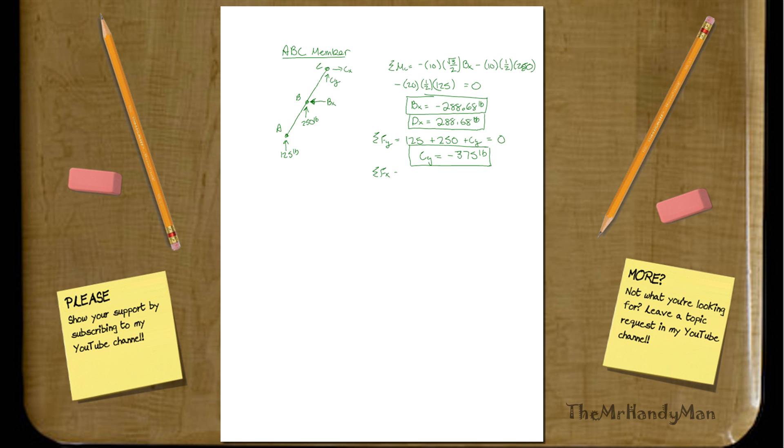If you go to sigma F of X, you're going to find that the only thing that is even putting force is going to be, you're going to have BX and CX, and they're going to, utilizing that BX must equal CX, or negative of CX, you can kind of just flop it, and you'll find that in this orientation that CX is in, that CX will equal negative 288.68 pounds. That's just in this orientation, you need to remember that.